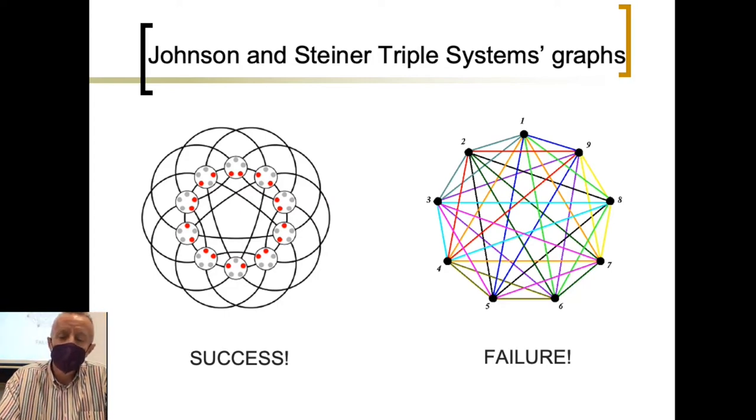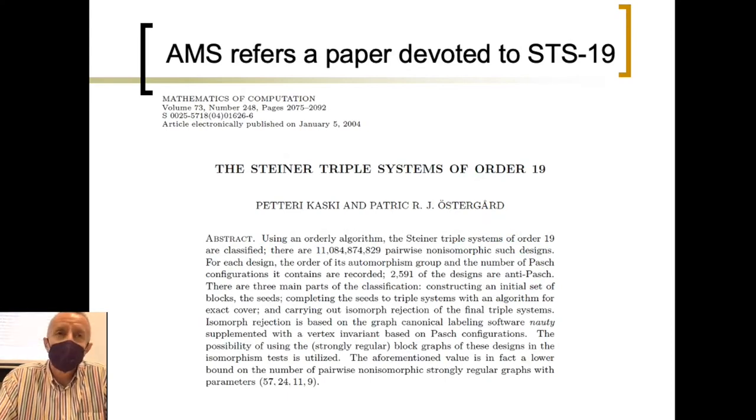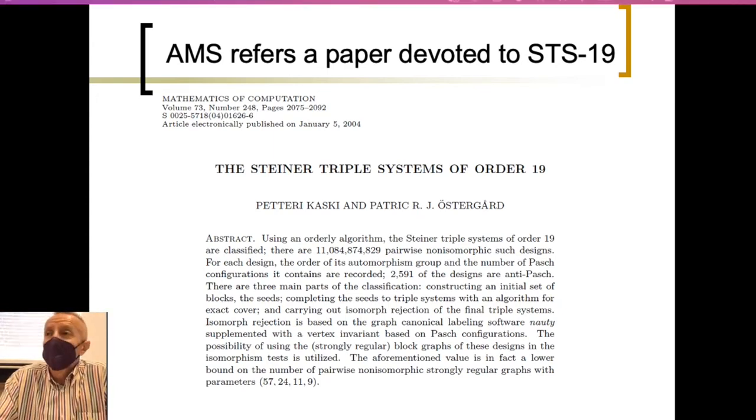What are these Steiner-Triple system graphs? In order to take an idea regarding how important are them, we can see that the American Mathematical Society refers a paper devoted just to the study of the STS-19 graphs. And, in this paper, I don't know what is the length of that, you can see the reference on the screen, has been identified more than 10,000 million different pairs of non-isomorphic graphs.